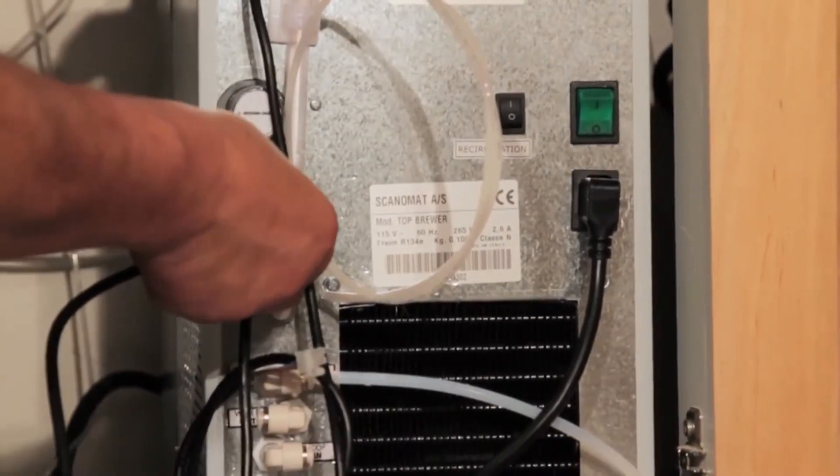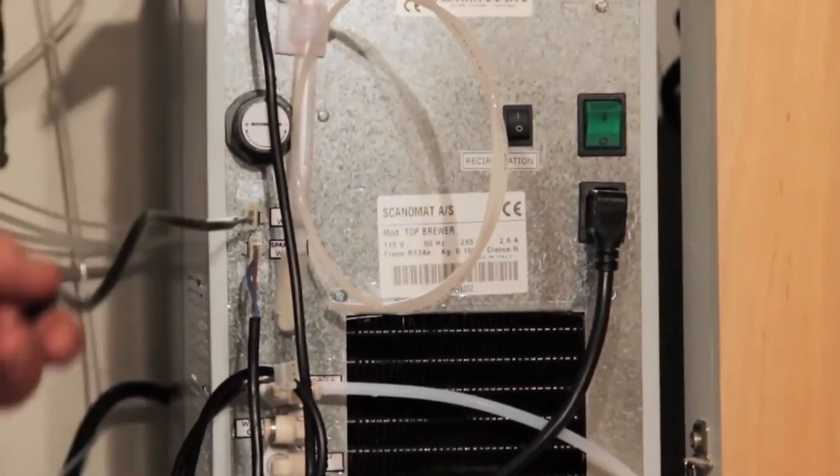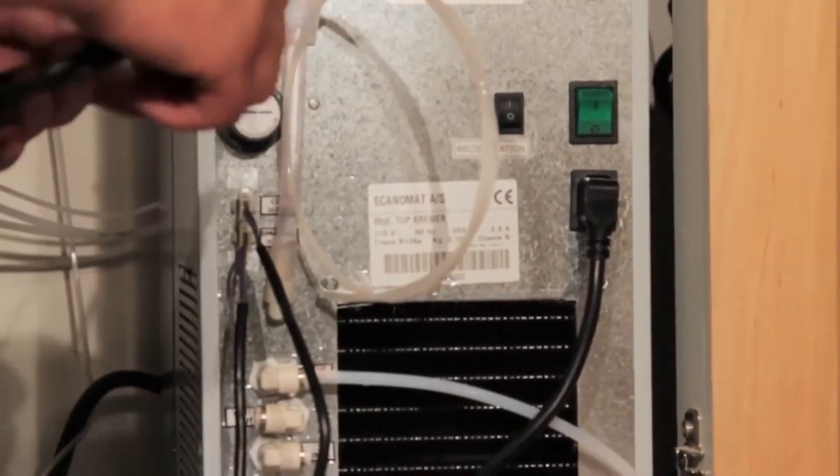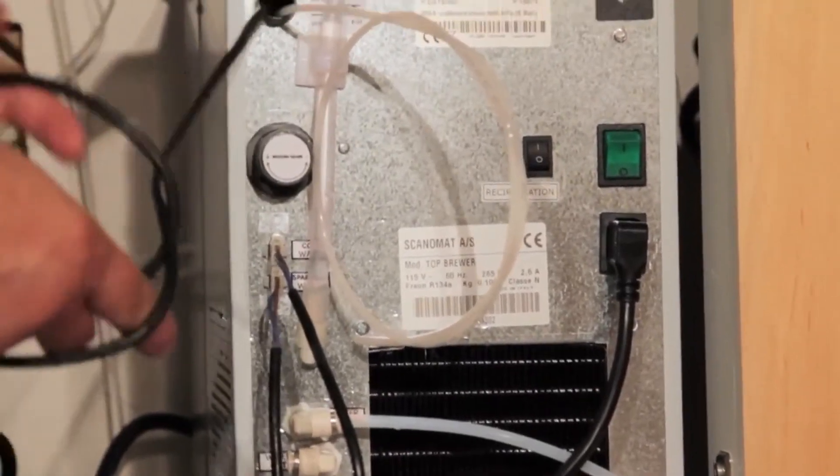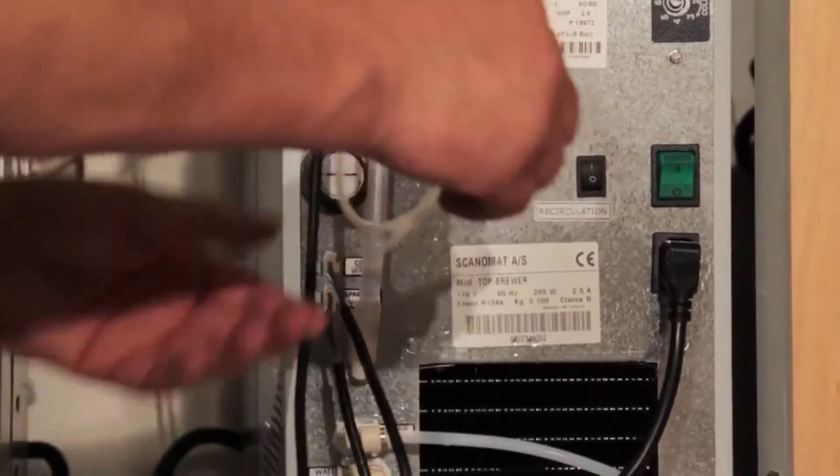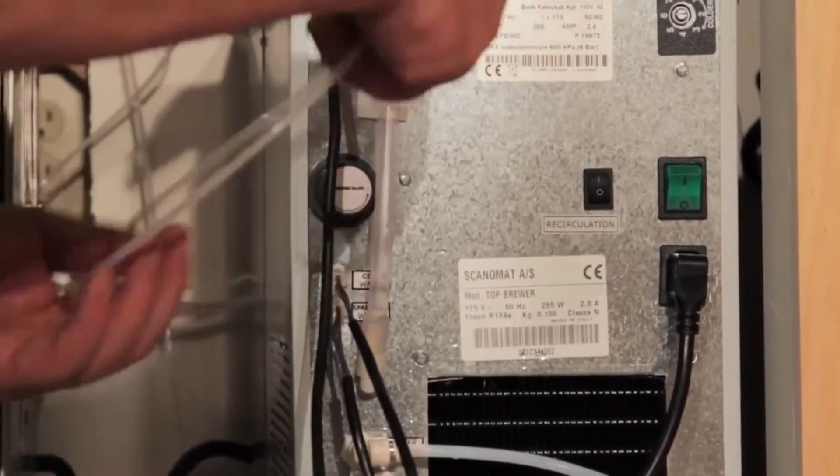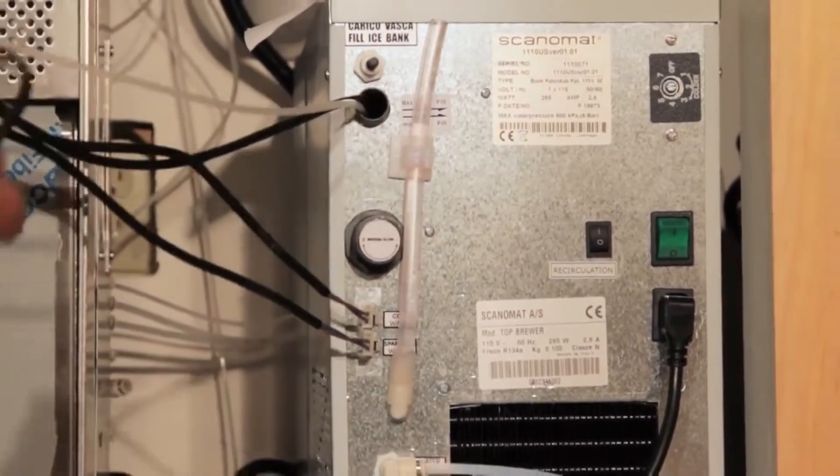And one for cold water. This one here is for your milk, which is the milk pump that goes right inside the refrigerator. Then this is our flush line which will go right into the machine.